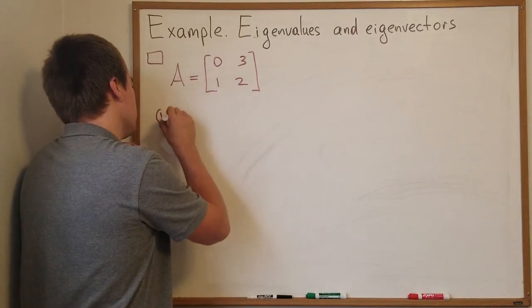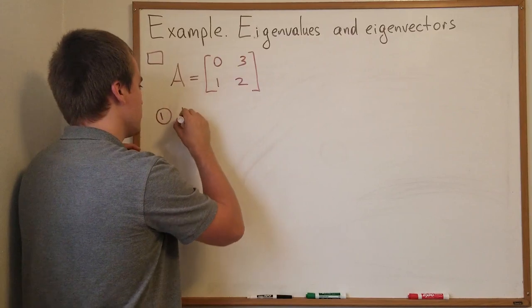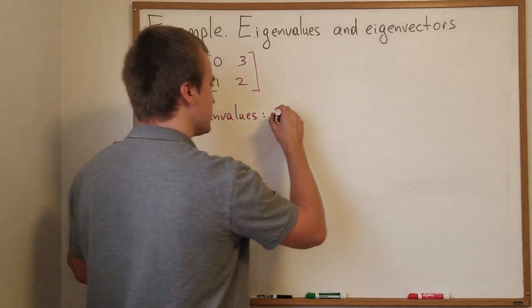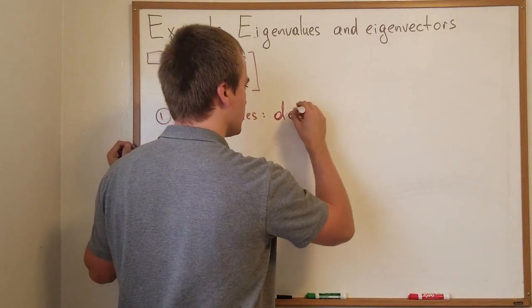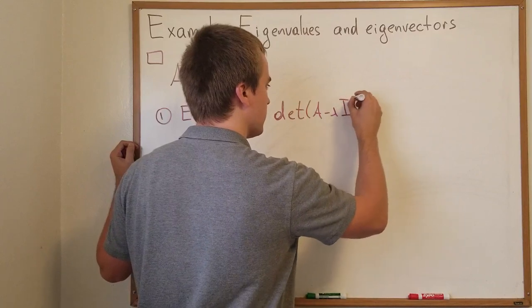So according to my previous video, if I want to find my eigenvalues, it should be my first step. And I just need to find for which lambda this determinant is going to be 0.